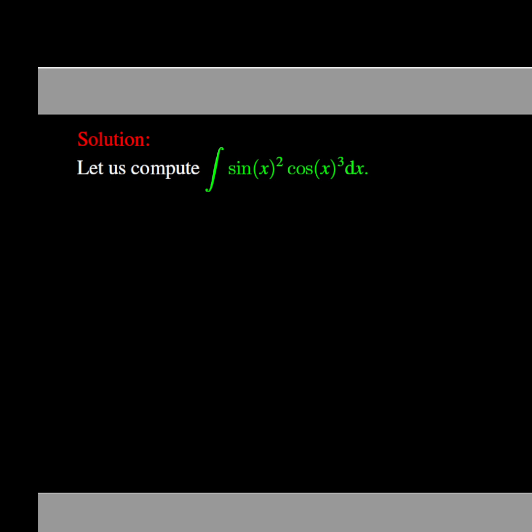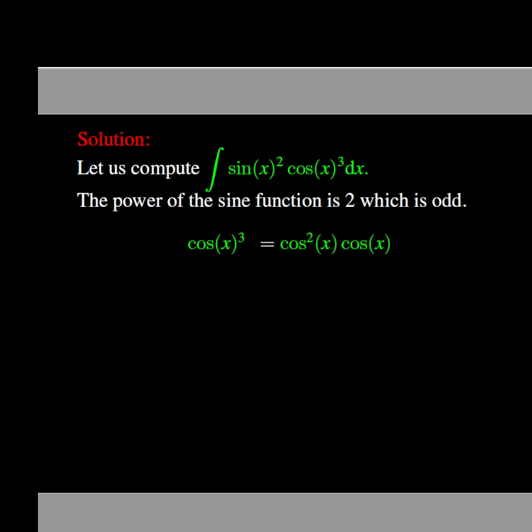The power of the sine function is 2, which is even, and the power of the cosine function is 3, which is odd. Since the power of the cosine function is odd, we can rewrite cosine to the power 3 of x as the product of cosine to the power 2 of x and cosine of x.